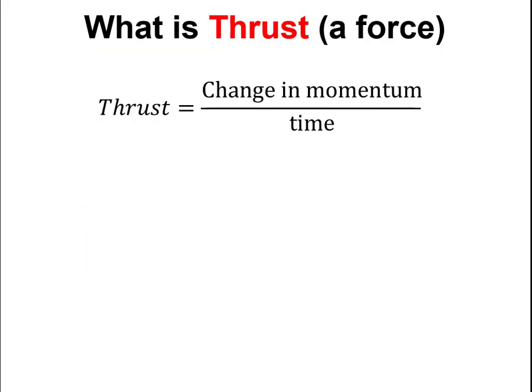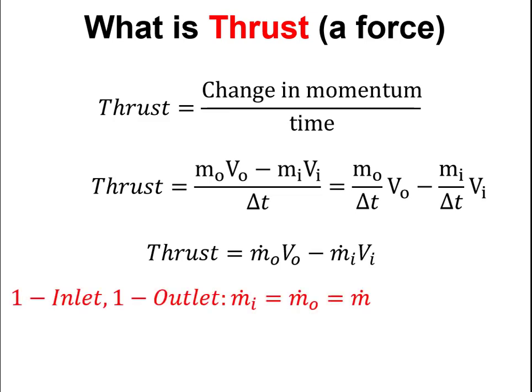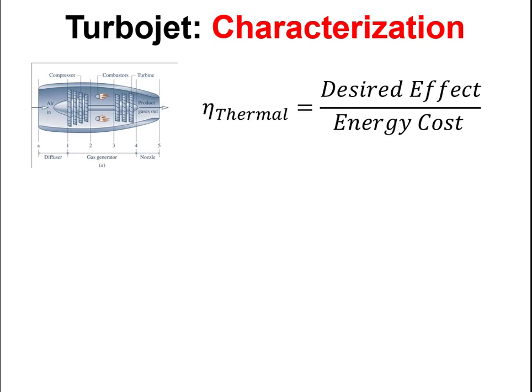The turbojet engine is a little different from all the other heat engines we've looked at because the energy benefit we're trying to generate is thrust. Thrust is a force given by the change in momentum over time, so we get an equation involving the mass flow rate of the fluid and the velocity of air coming in and out. Knowing that mass flow rates are the same, thrust equals mass flow rate times the change in air velocity through the engine.